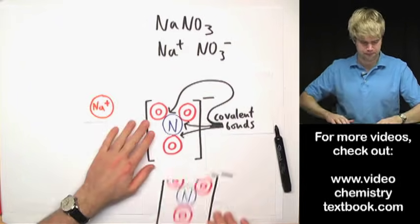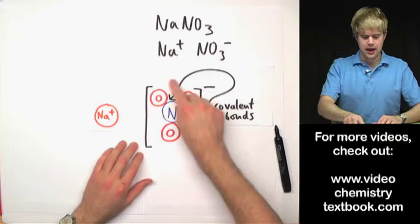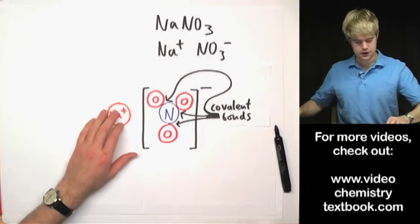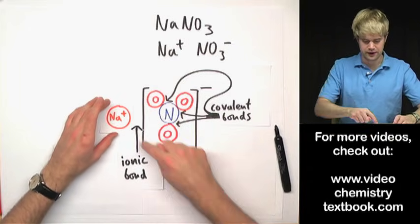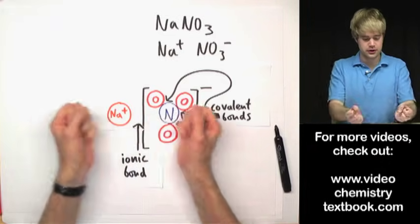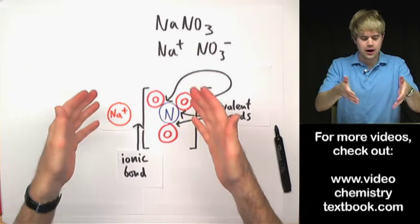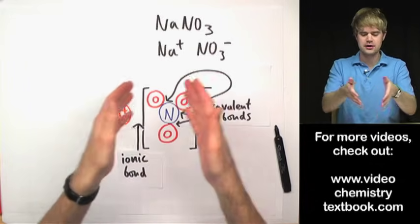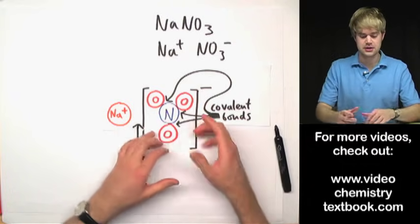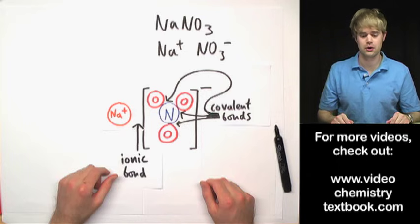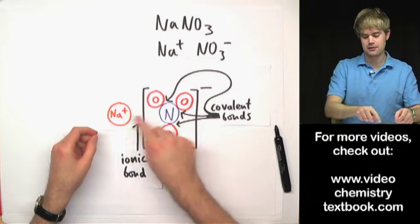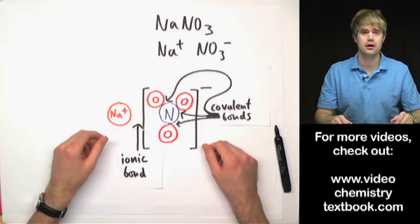Here's the NA+, and here's the NO3 1-. These want to stick together because they have opposite charges, so it's an ionic bond holding this whole clump together with the NA+ ion. There are ionic bonds holding the positive thing together with the negative thing, but then there are covalent bonds holding all of the atoms together in the nitrate clump. So an ionic compound with polyatomic ions in it has both ionic bonds and covalent bonds.